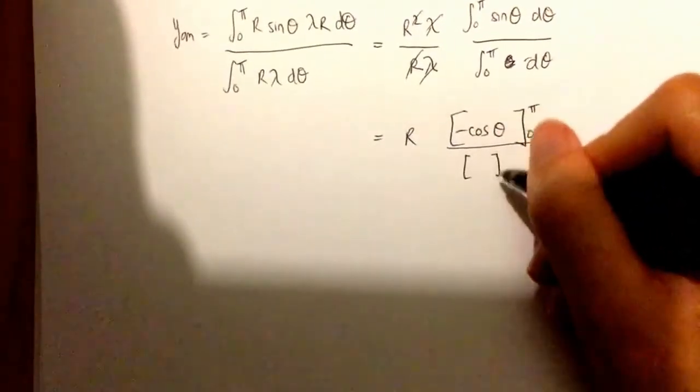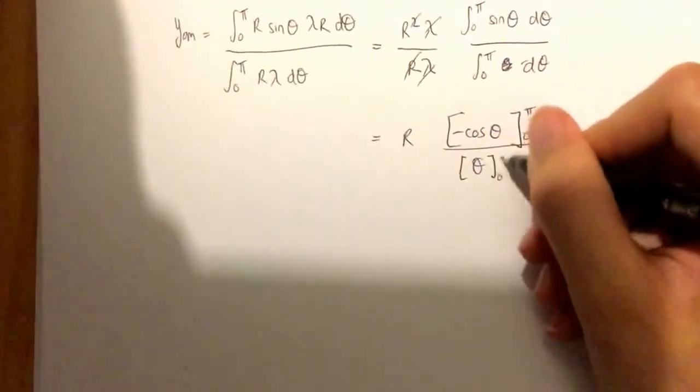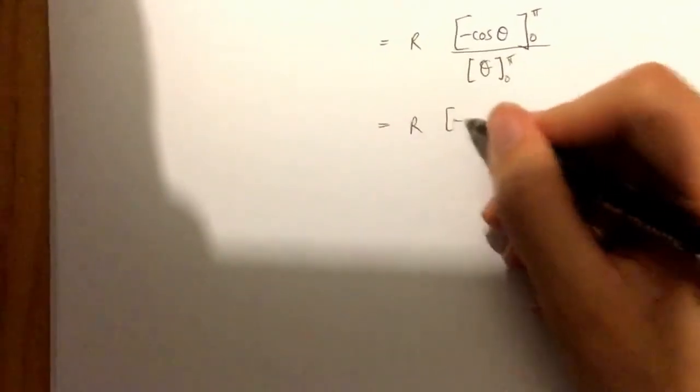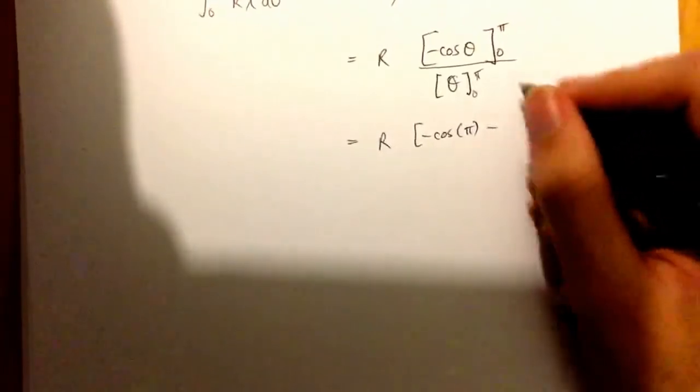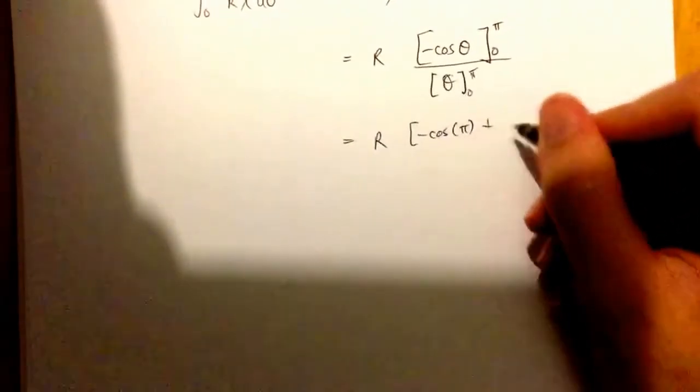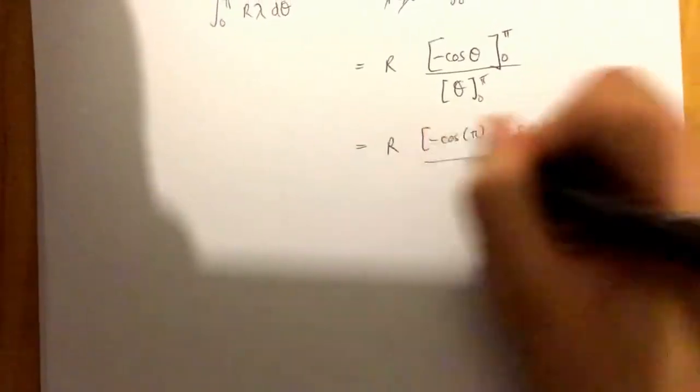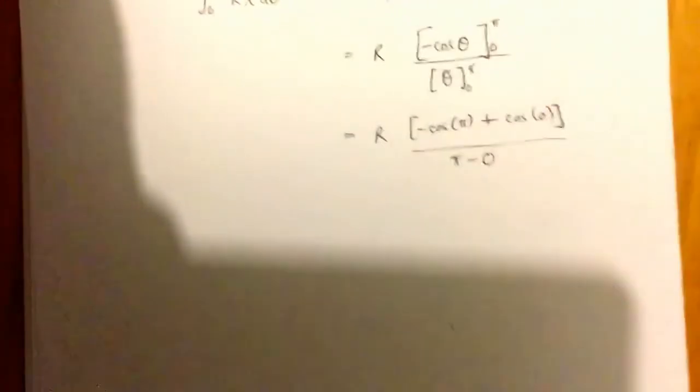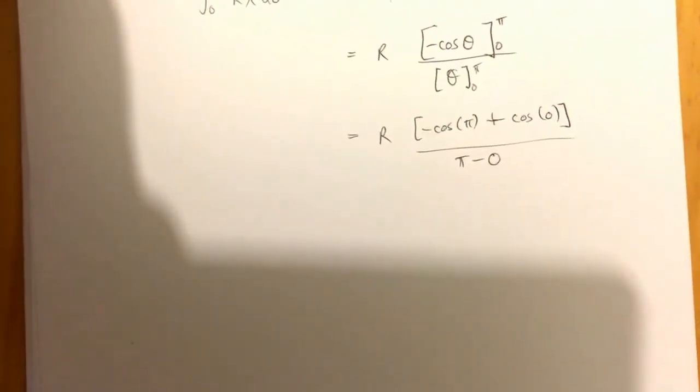limits of 0 to pi. And then when we integrate 1 d theta, we're just going to end up with theta, 0 to pi, and that's going to be equal to r. Then we take this and we plug in our limits, so negative cos of pi, take negative cos of 0. So it's going to be plus cos of 0, because it's a double negative, divided by, and we basically get pi minus 0, because what we do is we substitute in theta equals pi, and then theta equals 0.